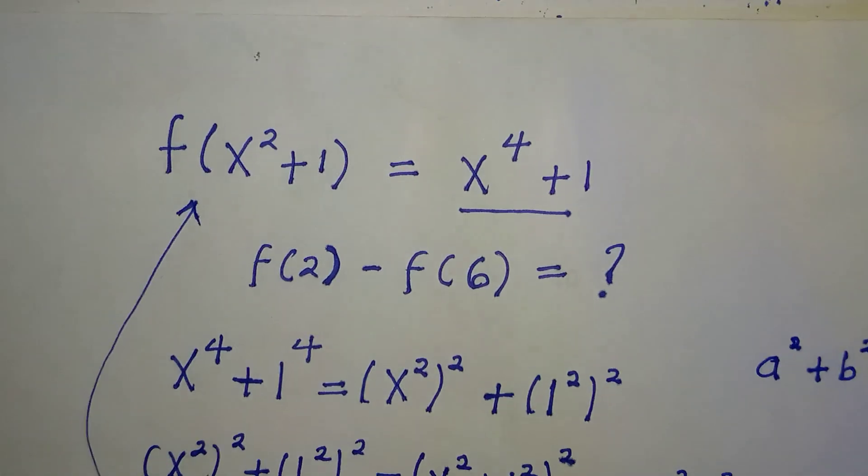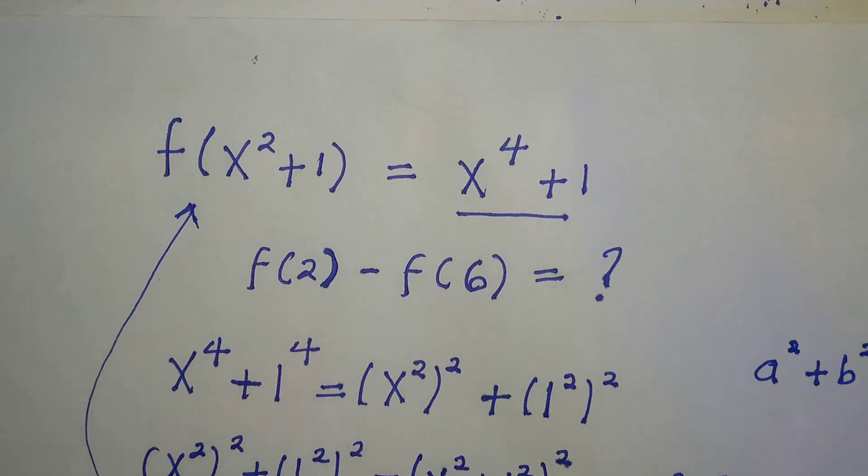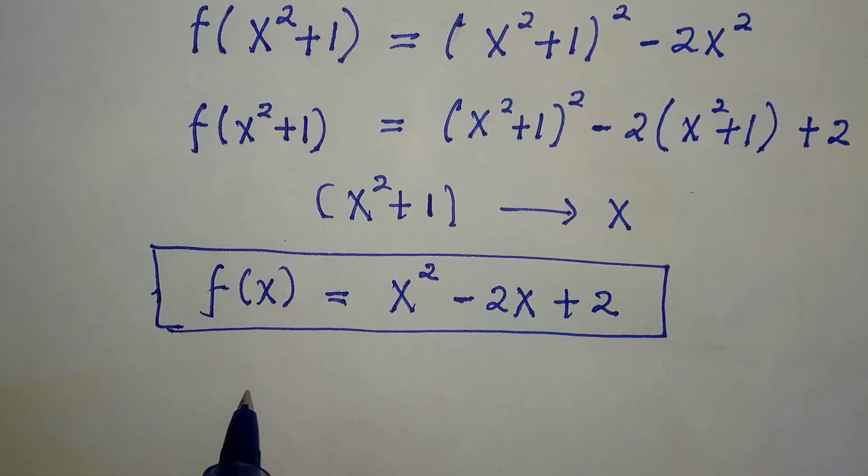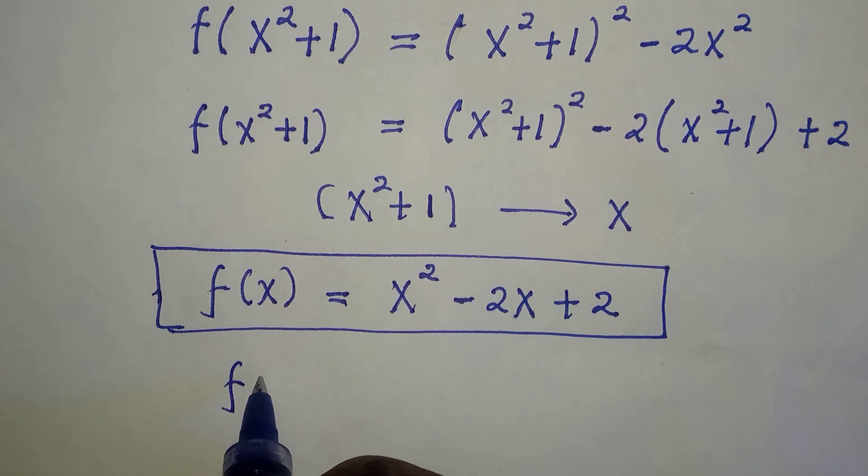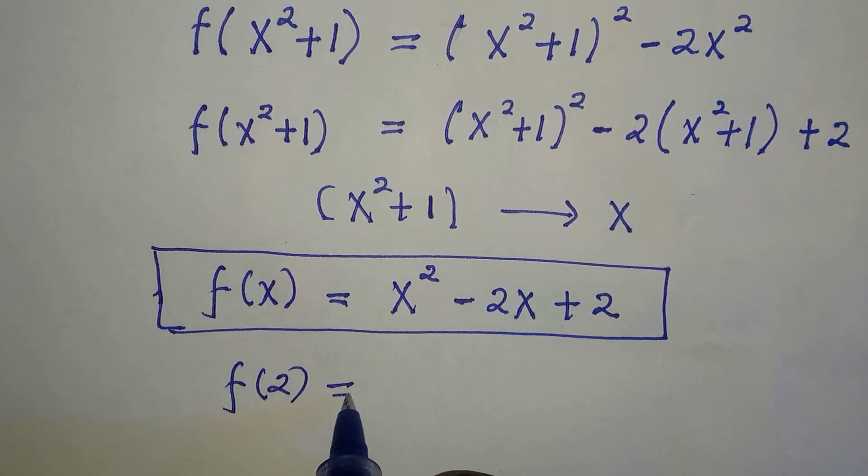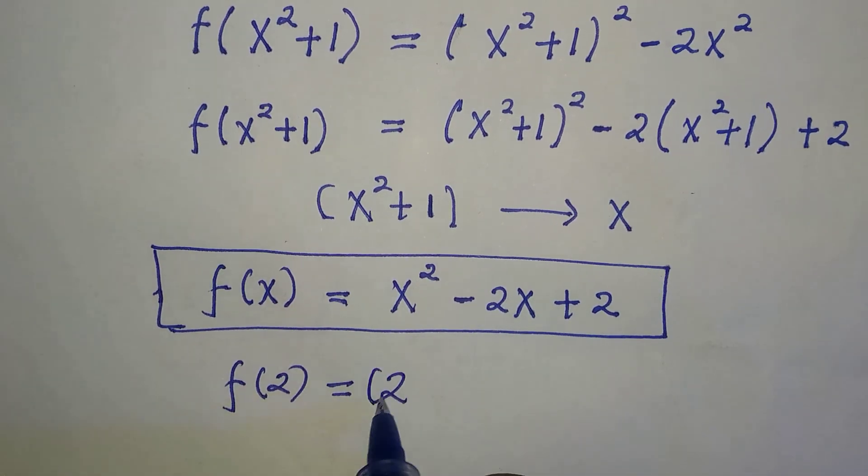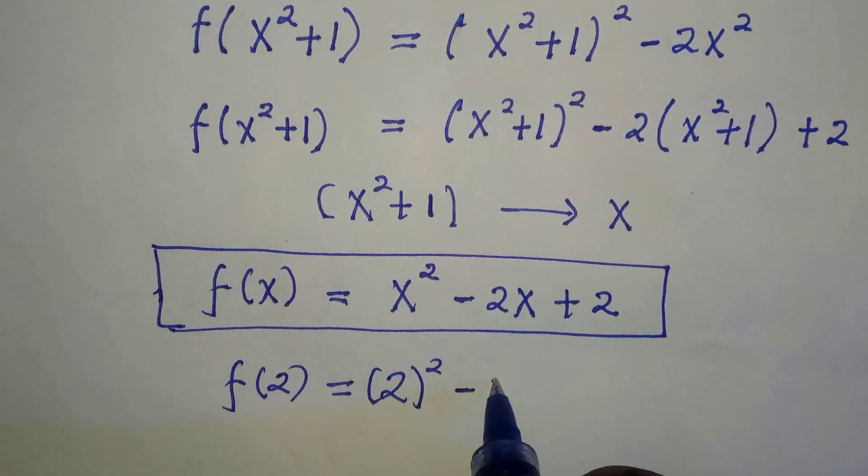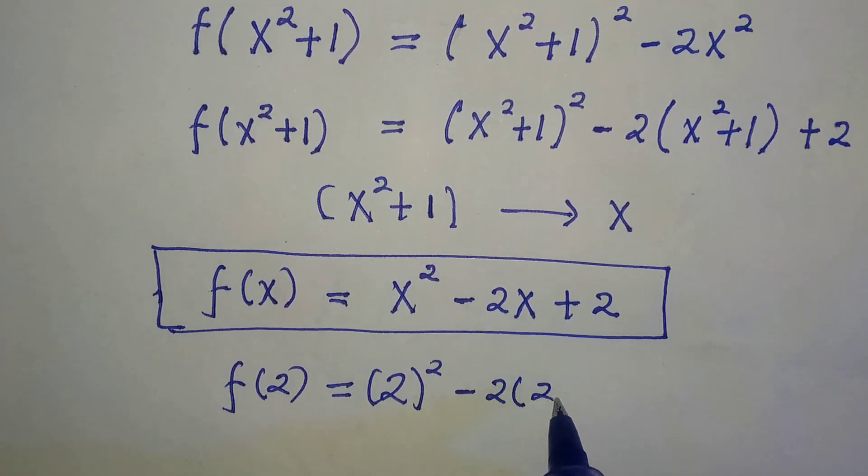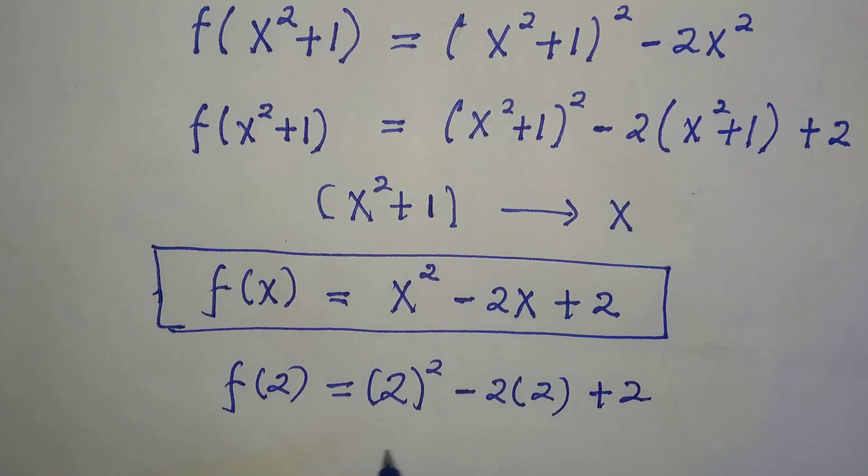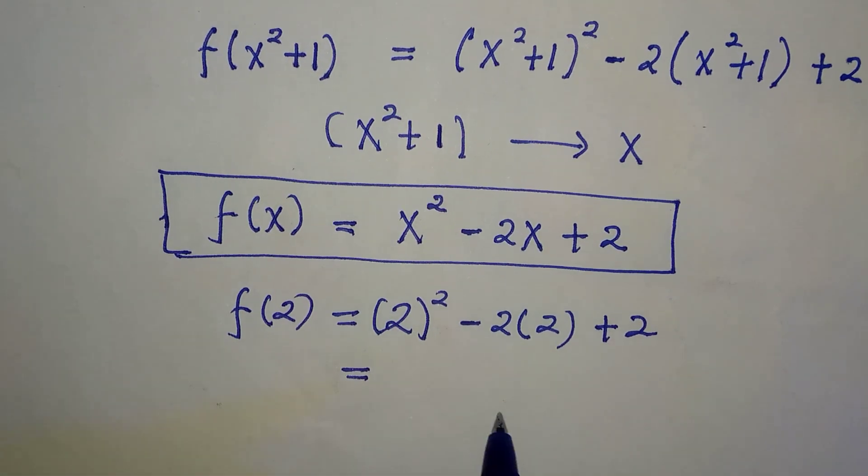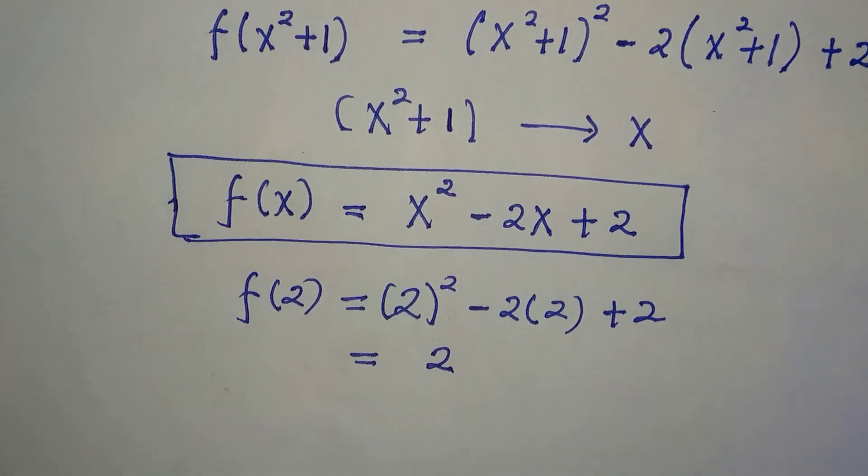What we're asked to calculate are f(2) and f(6). So since both are valid for real numbers, by changing x with 2 we have 2² minus 2 times 2 plus 2. And if we expand this and simplify, we are going to have 2.